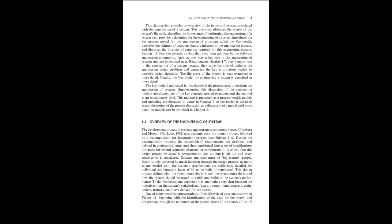Requirements, Section 1.7, play a major role in the engineering of a system because they serve the role of defining the engineering design problem and capturing the key information needed to describe design decisions. The life cycle of the system is next examined in more detail. Finally, the V model for engineering a system is described in more detail. The key method addressed in this chapter is the process used to perform the engineering of systems. Models and modeling are discussed in detail in Chapter 3, and this method is presented as a process model.